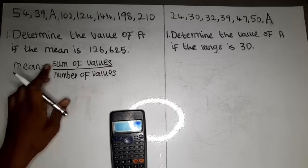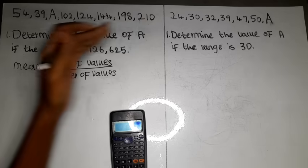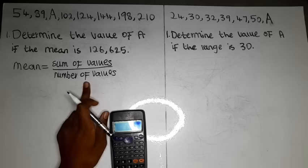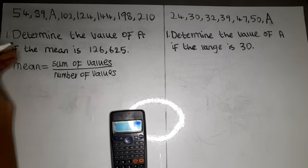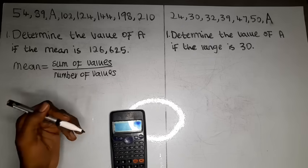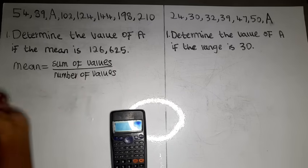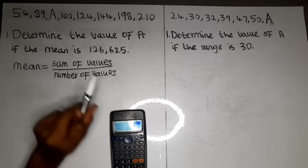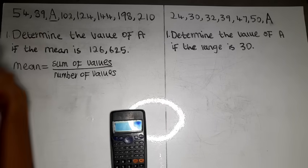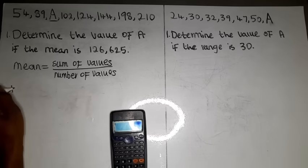Sum of values literally means you add all your values together, then divide by the number of values. So we are now going to substitute into the formula. They say the mean is 126.625, so we write: 126.625 equals the sum of values divided by the number of values.